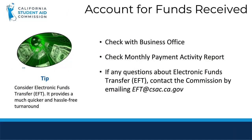Cal Grant funds are received at the business office of the educational institutions. As a financial aid administrator, you will be able to check the amount of funds being sent by checking the monthly payment activity report, which is available in WebGrants. Depending on your school's preferred method, the funds will come via a Warrant or Electronic Funds Transfer. If you have questions about your funds or about the EFT, please contact the Commission.